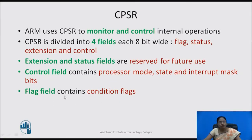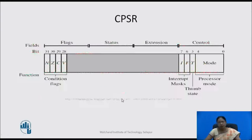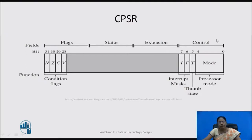The flag field contains the condition flags. Different condition flags are available and we will see them in detail. This is the CPSR register divided into four fields: the flags field, status field, extension field, and control field. The flag field contains the condition flags N, Z, C, V. The control field contains bits for interrupt mask, state, and mode (bits 0 to 4).